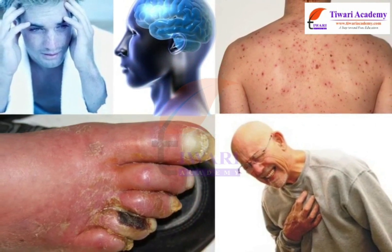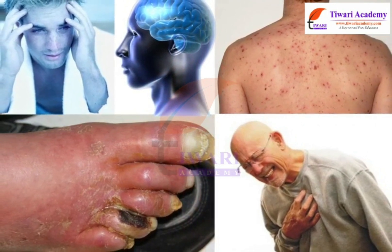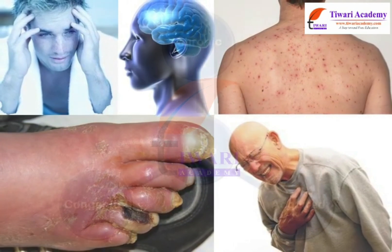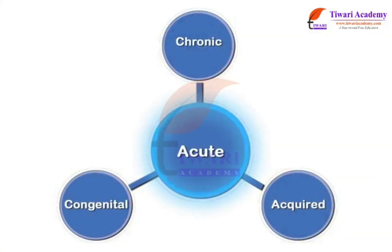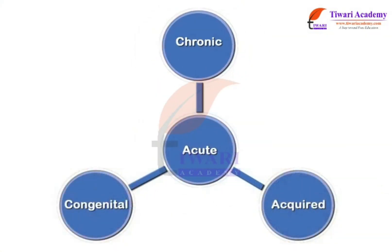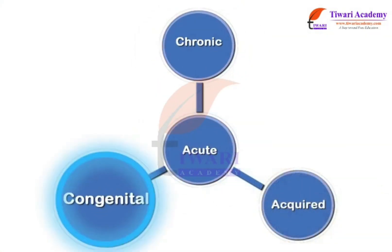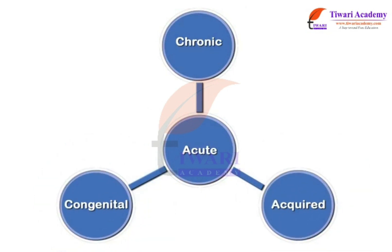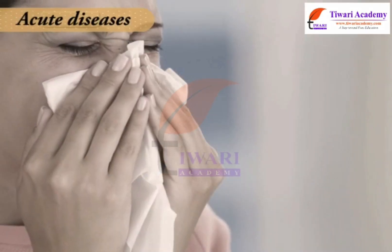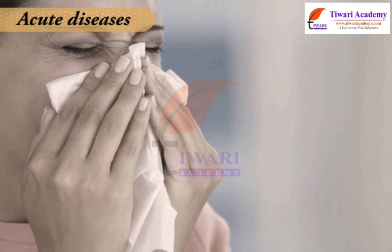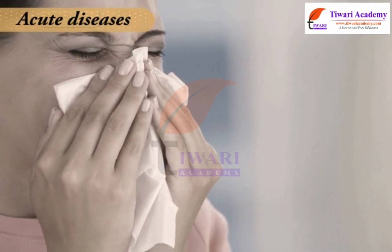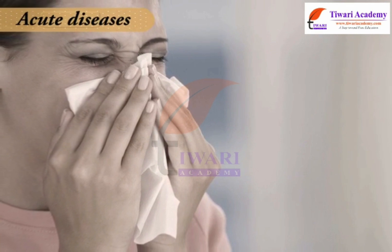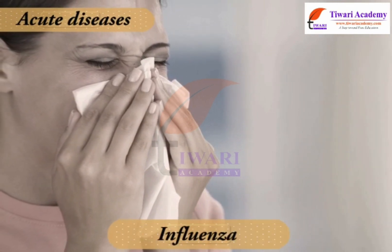On the basis of duration, human diseases are grouped into four categories: acute, chronic, congenital and acquired. Acute diseases are those whose effects come on suddenly and affect the body quickly. Example: influenza.